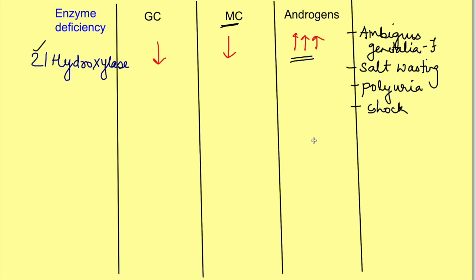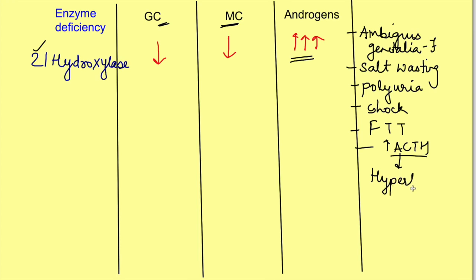It is very important to identify this problem early. Glucocorticoid deficiency leads to inability to maintain growth, or weight loss — what we call failure to thrive. Additionally, because of loss of negative feedback, there is increase in release of ACTH, and along with that melanocyte-stimulating hormone is also released, which causes hyperpigmentation. So these patients will have hyperpigmentation.